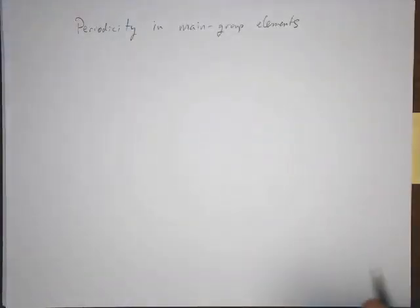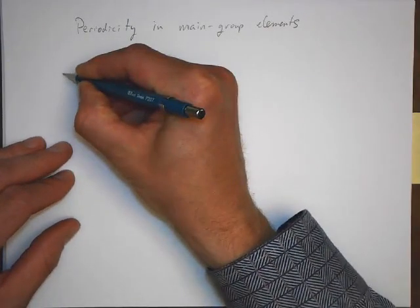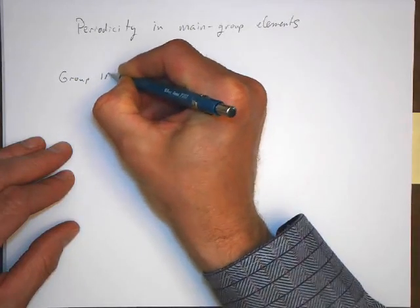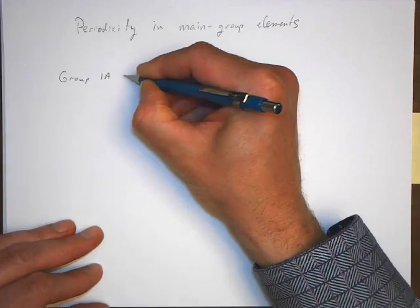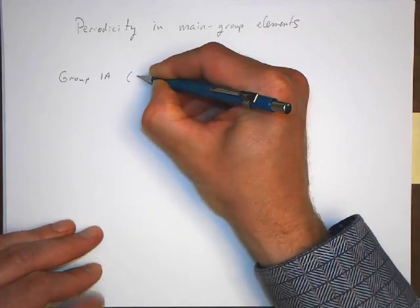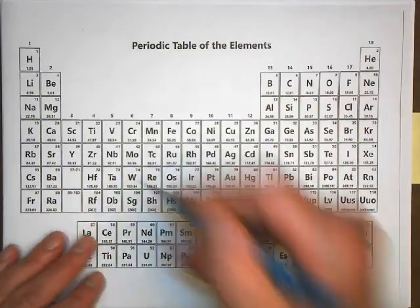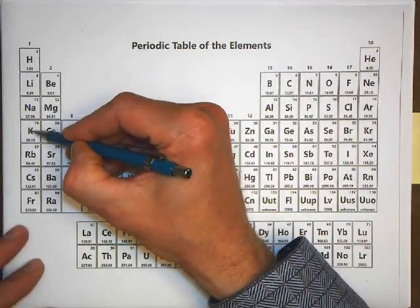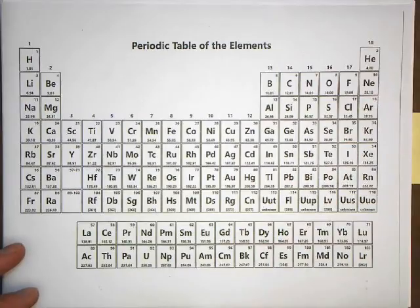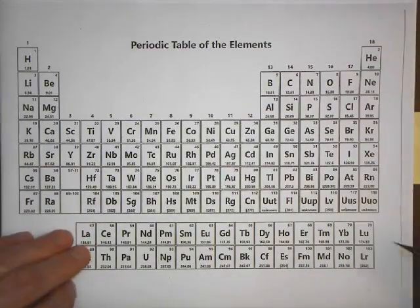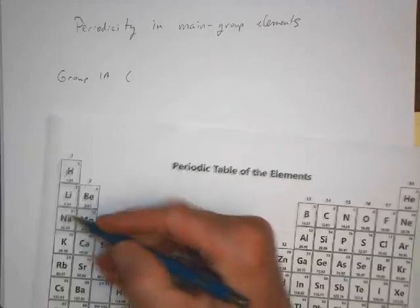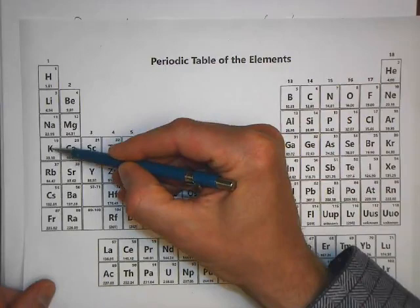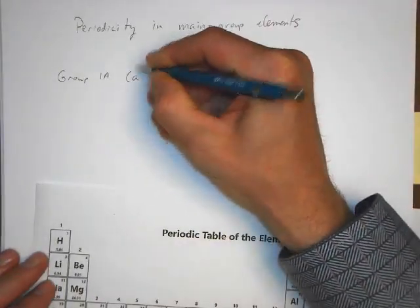Let's first start with what are called the Group 1A metals. These are sometimes called alkali metals. We're talking about lithium, sodium, potassium, rubidium, cesium, and francium.